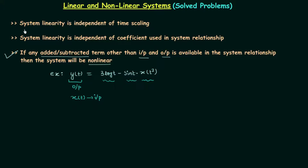According to the first property, the system linearity is independent of time scaling. So if you perform time scaling the system is going to be linear. In this case, you can see there is time scaling — t² is there — and as there is time scaling, there will be no effect on the linearity of the system. The system is going to be linear. So for x(t²) we have linear as the result.